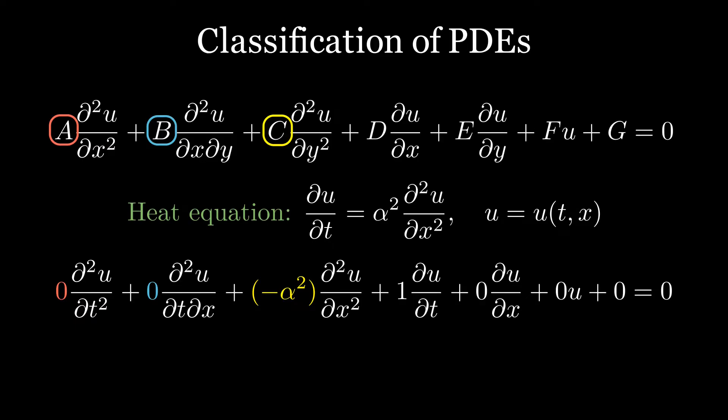We may need to rearrange the terms to identify A, B, and C. With A and B being zero and C being minus alpha squared, B squared minus 4AC is zero, meaning that the heat equation is a parabolic PDE.